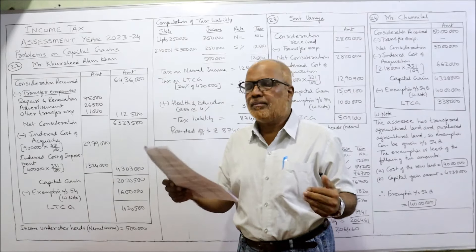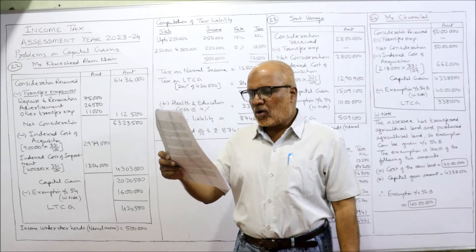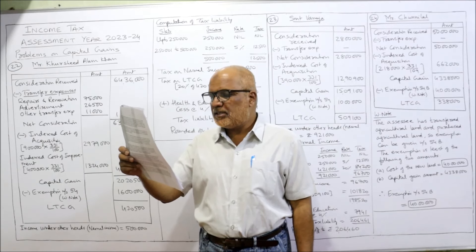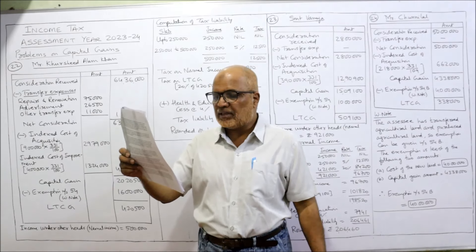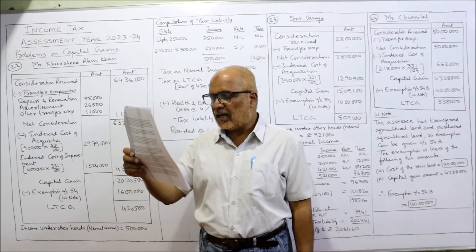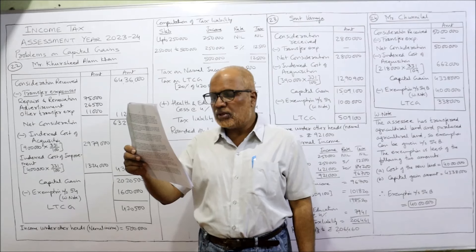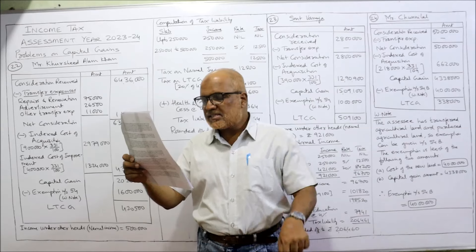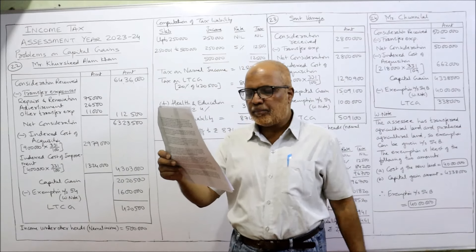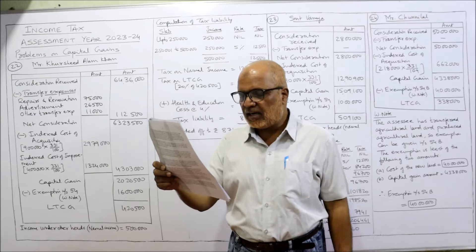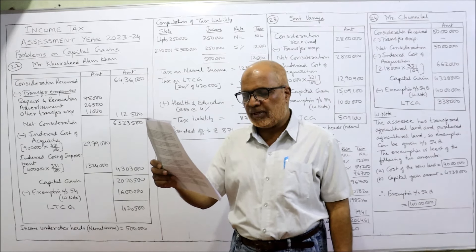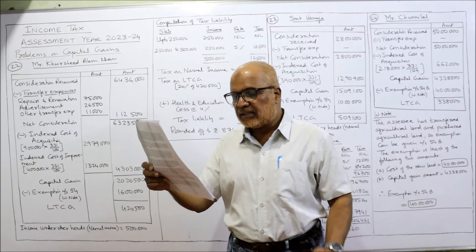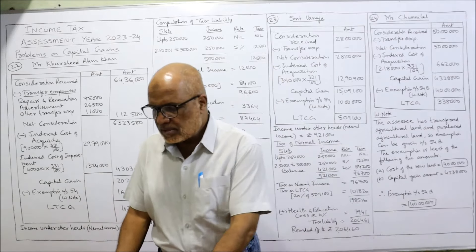The cost of acquisition was Rs. 4,28,000 acquired years ago. FMV on 1st April 2001 is Rs. 9,50,000 and the stamp duty value is Rs. 9,00,000. He added one more floor in 2001-2002 at a cost of Rs. 4,00,000. CII is 100. After selling the building, he immediately purchased a small house for Rs. 15,00,000 and deposited Rs. 1,00,000 in the Capital Gain Account Scheme. Calculate income from capital gain and tax liability if income from other heads is Rs. 5,00,000.